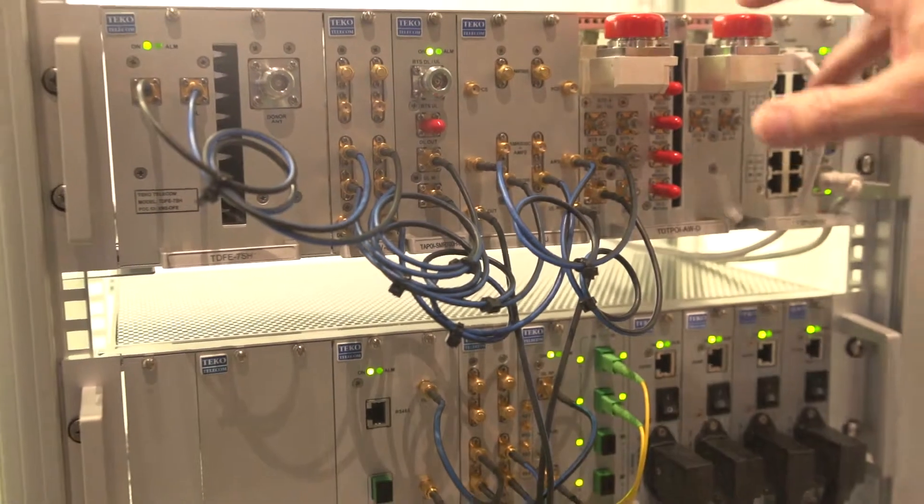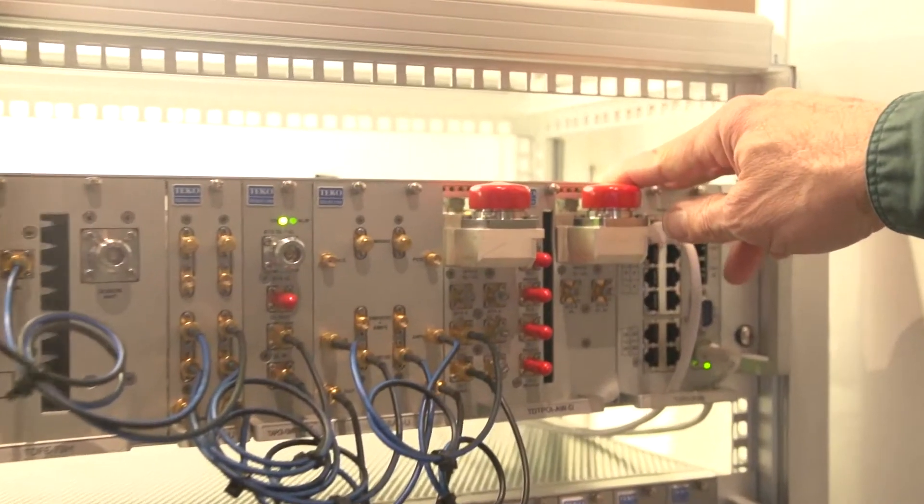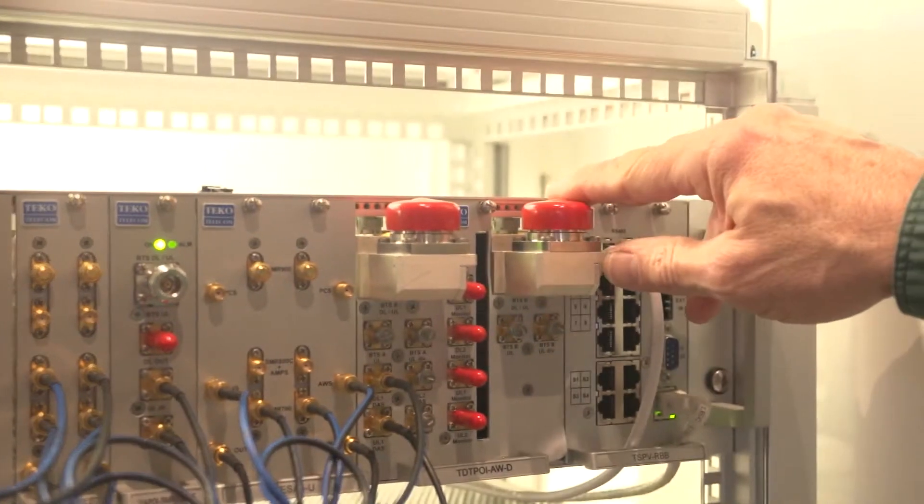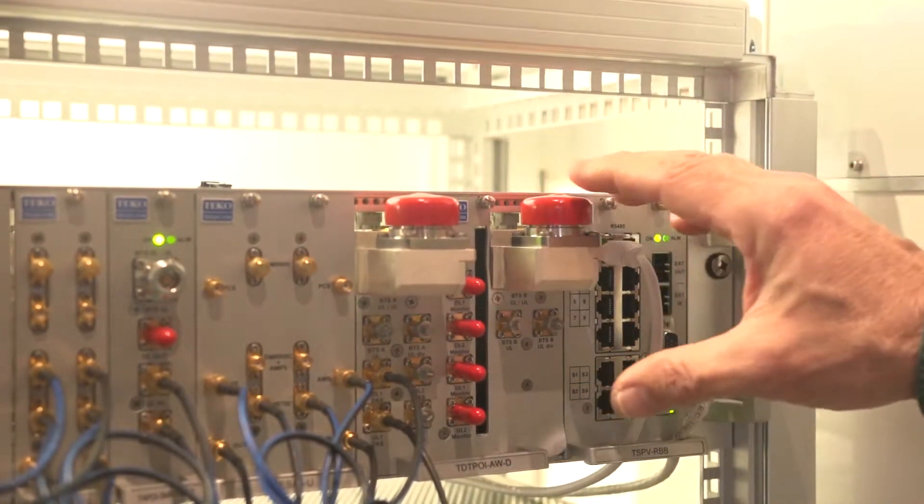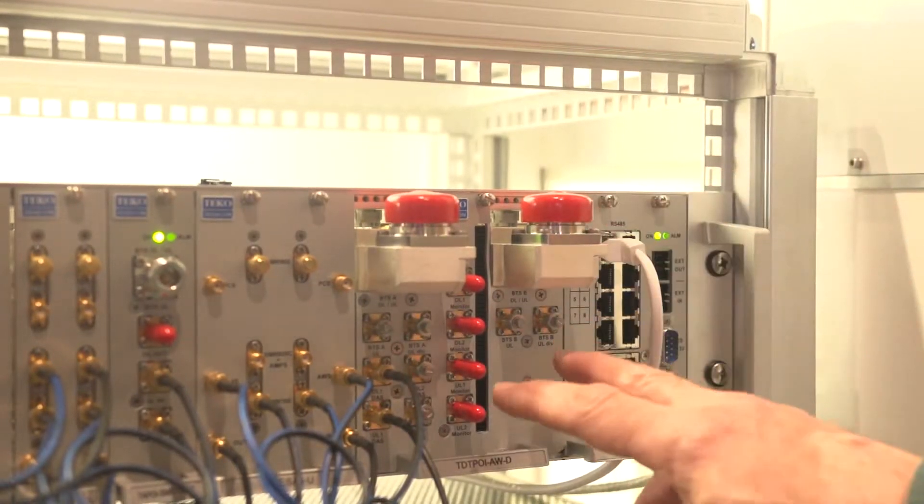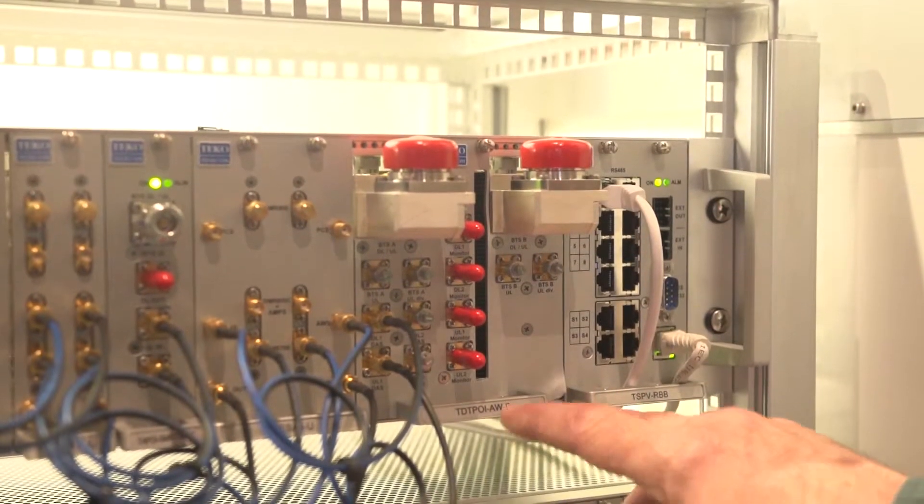We can also interface to a high-power base station with up to a 46 dBm input using our active DAS tray. This comes in two varieties: single or double.